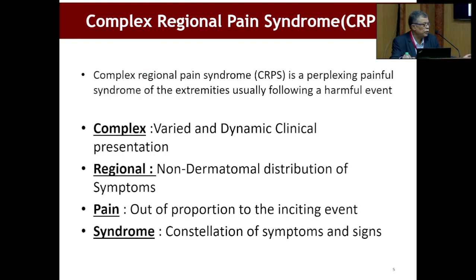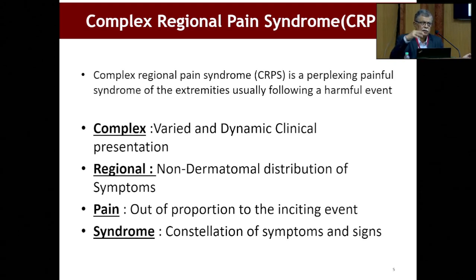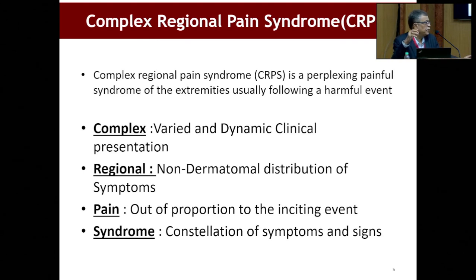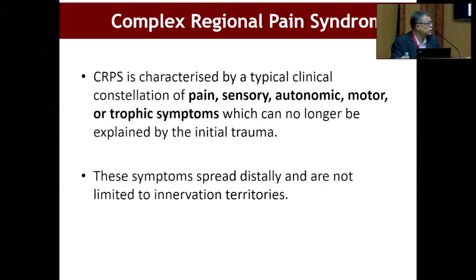Why is it called Complex Regional Pain Syndrome? Because it's a very complex pain with varied and dynamic clinical presentation. 'Regional' because it's a non-dermatomal distribution of pain, not limited to the dermatome where the injury occurs. Pain is out of proportion to a very trivial injury — something as simple as a friend twisting your arm can result in CRPS. 'Syndrome' because it is a constellation of symptoms: pain, sensory, autonomic, motor, and trophic symptoms which can no longer be explained by the trivial trauma.